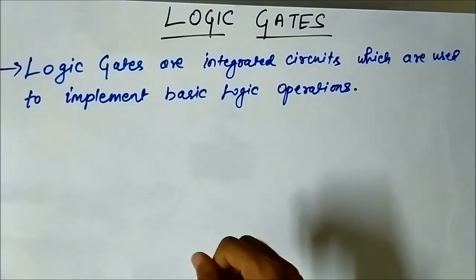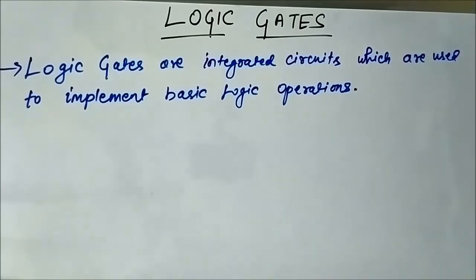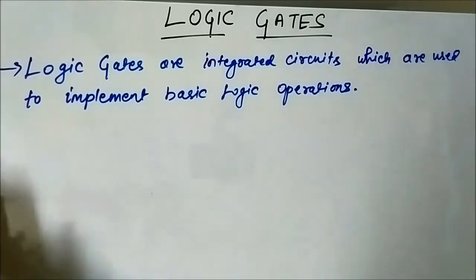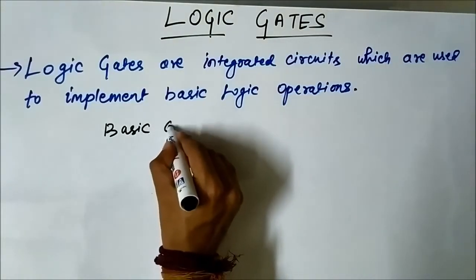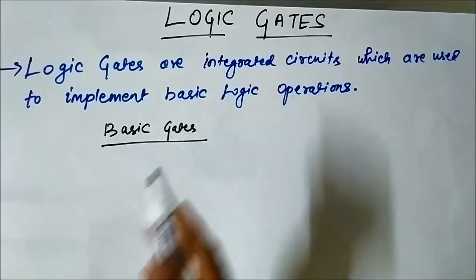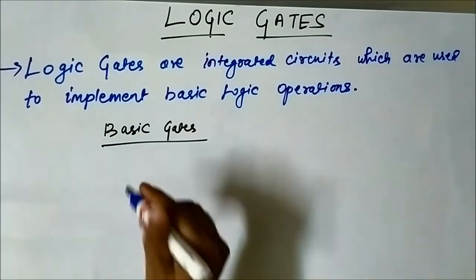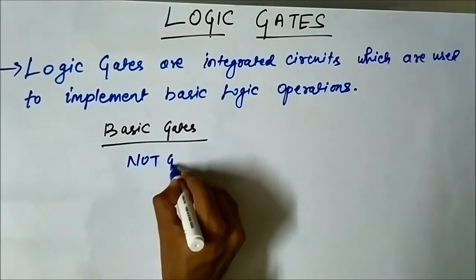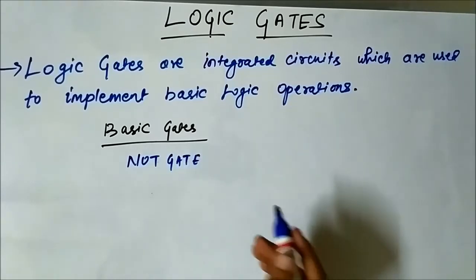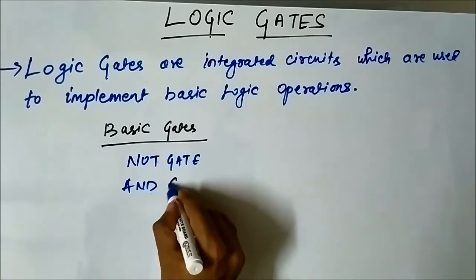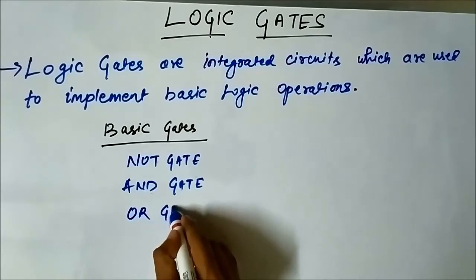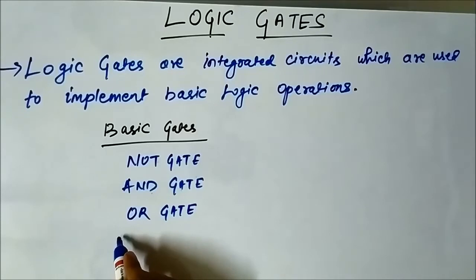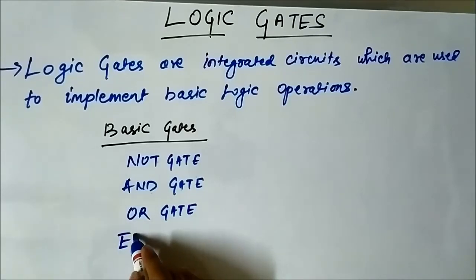Logic gates can be divided into two categories. The first one is the basic logic gates. The basic gates involve the NOT gate, which is also called the inverter gate, then the AND gate, the OR gate, the exclusive OR gate, which is also called the XOR gate.